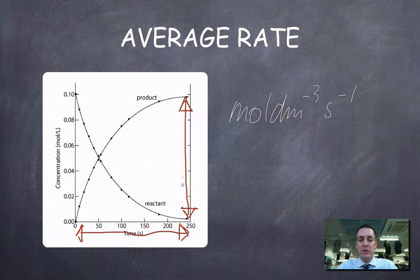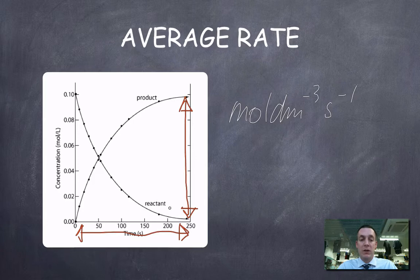Then we can see that this is simply y over x, which is the gradient of a line. The gradient of this particular line is changing all the time because it's a curve, but nonetheless we can find the average gradient by finding the overall change in concentration and dividing by the time taken.